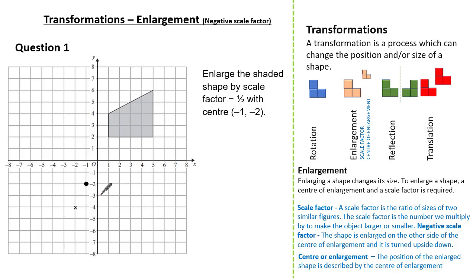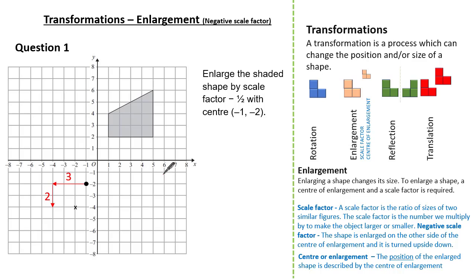Now let's repeat with another vertex. From our centre of enlargement this vertex was six to the right and four up. Our scale factor is negative one half, so we do the opposite and halve the lengths. Six to the right and four up now becomes three to the left and two down. This is our new vertex.